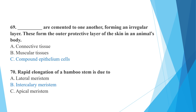Cells are cemented to one another forming an irregular layer, forming the outer protective layer of the skin in an animal's body. These are compound epithelium cells.